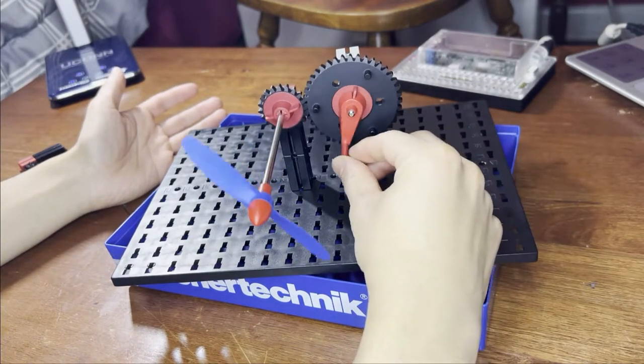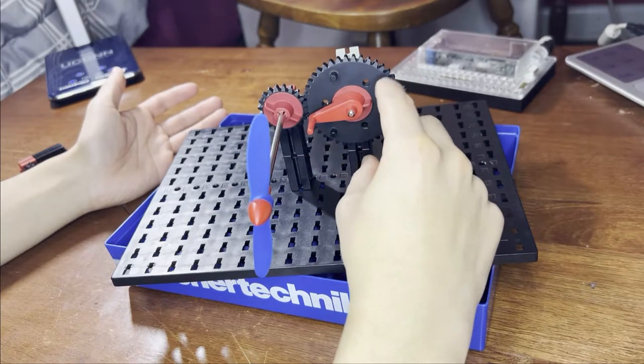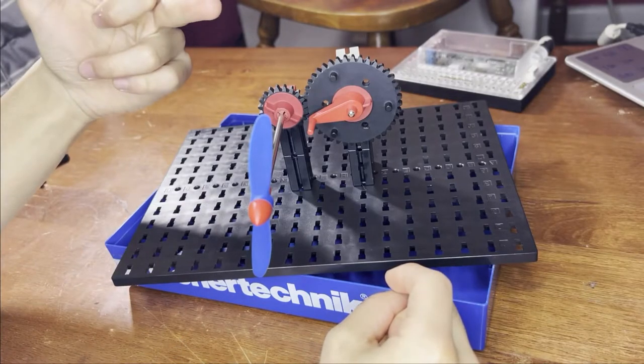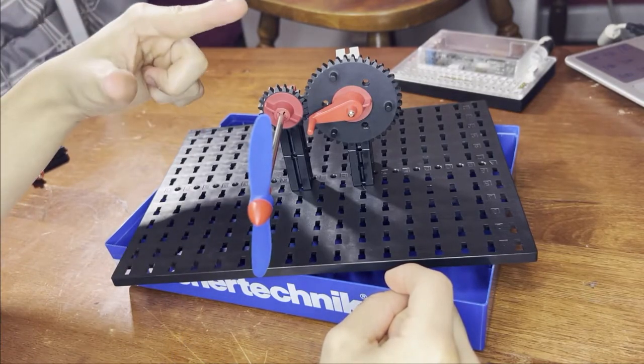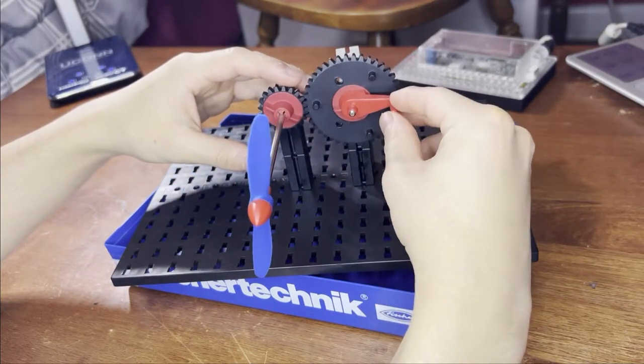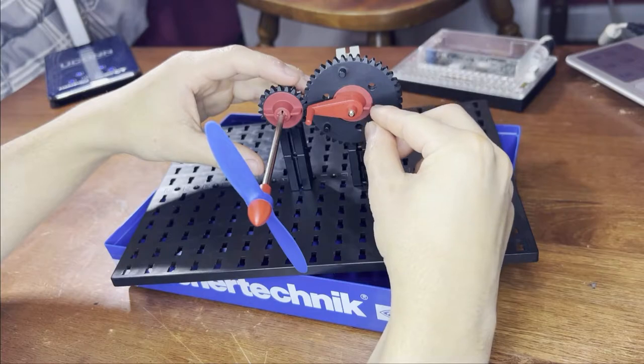If we rotate this bigger gear half of a turn, the smaller gear rotates a full turn. And I like to think that the force that you put into rotating it this small 180 degrees is spread out across 360 degrees of rotation.